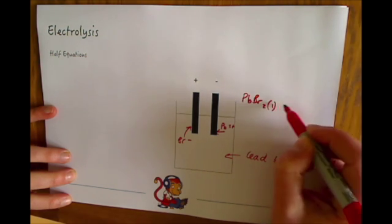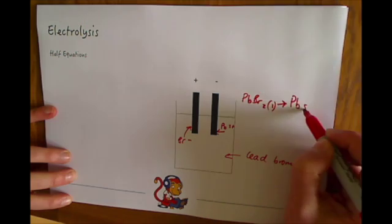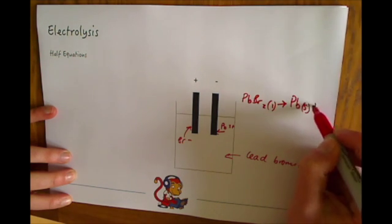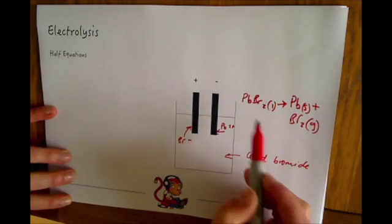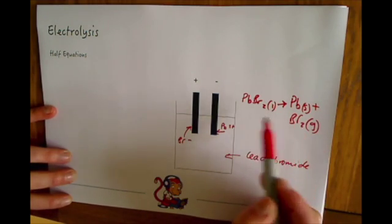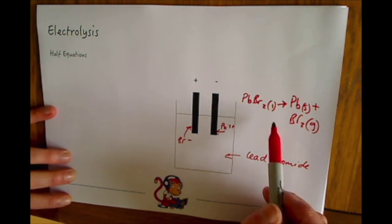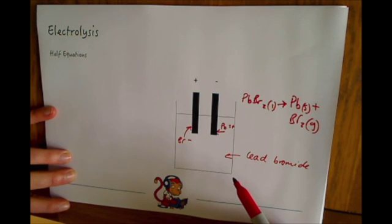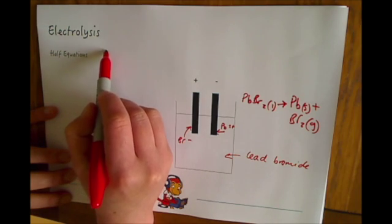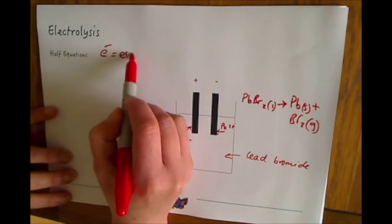...as a liquid turning into lead which is solid and bromine which is a gas. Now that's the format that we are used to seeing equations in, but half equations are going to be looking at one of these ions and talking about adding and giving electrons, so they will have the sign for electron which is e- in the equation.